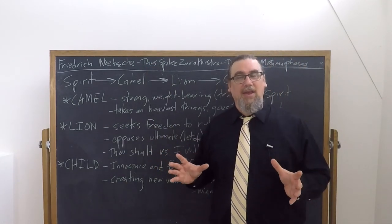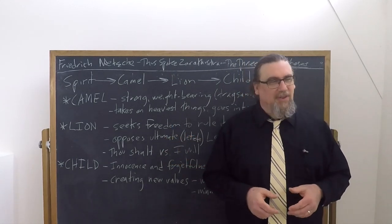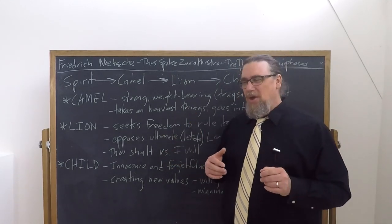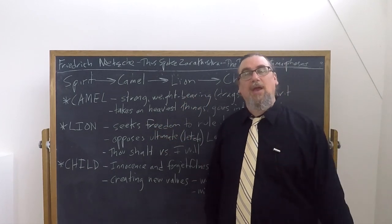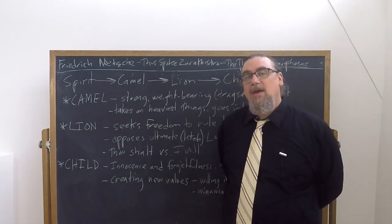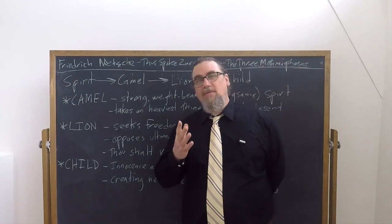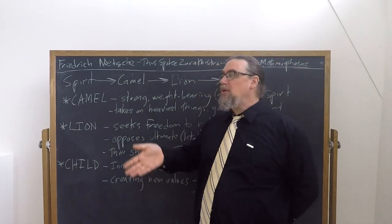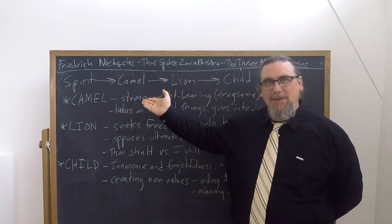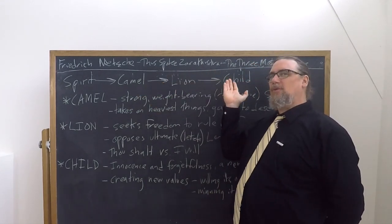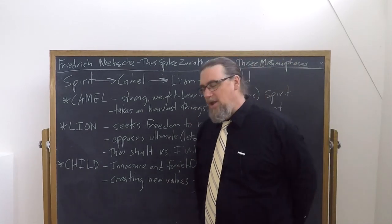Nietzsche is not setting out some sort of developmental theory here that says that everybody goes through these, or this is the only way to proceed, but he's setting out a path that a person could in fact follow. And we have the transformation of the spirit first into a camel, and then from the camel into a lion, and then from a lion into a child.